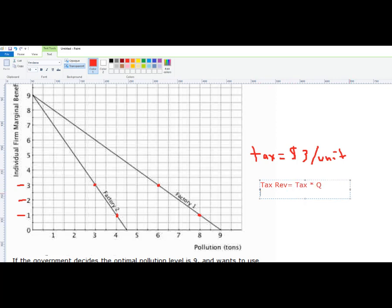So in this case, they're going to produce 9 units. So the tax revenue equals $3 times 9 units. And the tax revenue would be $27.